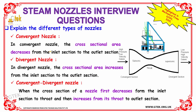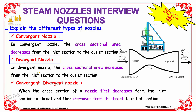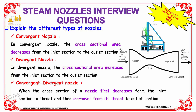Explain the different types of nozzle. The different types are: convergent nozzle, divergent nozzle, and convergent-divergent nozzle. The convergent nozzle has a cross-sectional area that decreases from the inlet section to the outlet section. The divergent nozzle has a cross-sectional area which increases from the inlet section to the outlet section.